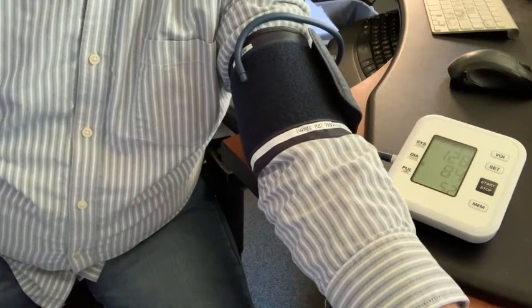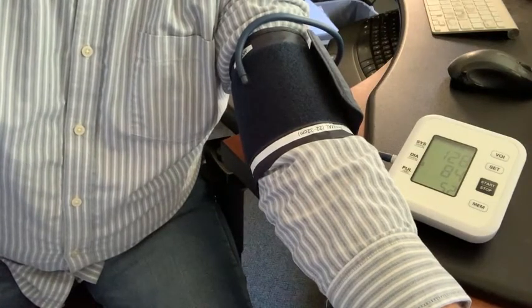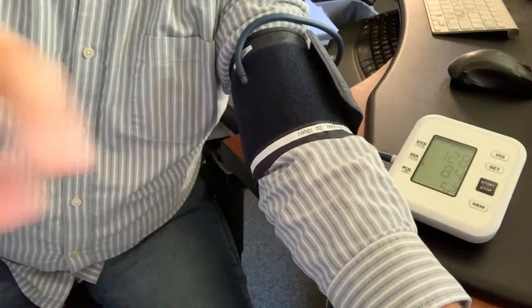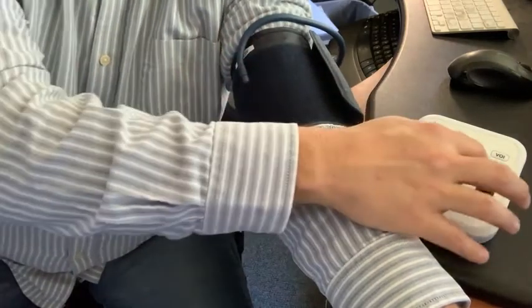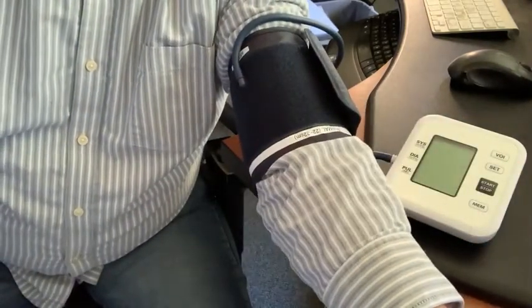Your blood pressure is systolic one hundred twenty-eight millimeters of mercury, diastolic eighty. So it was pretty much on, that's how it works.